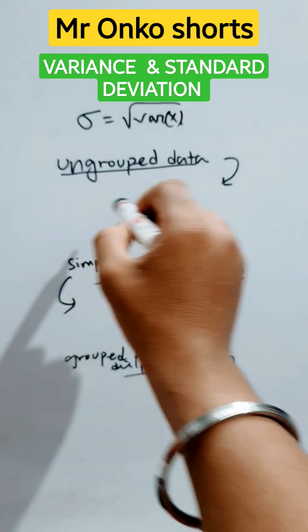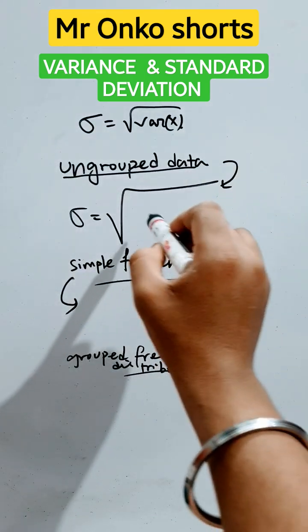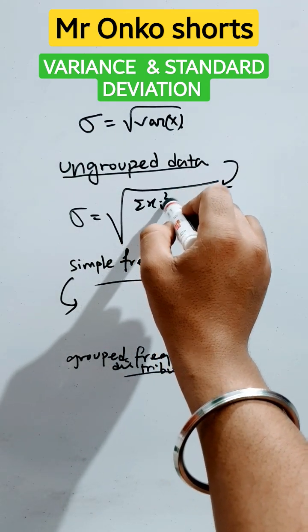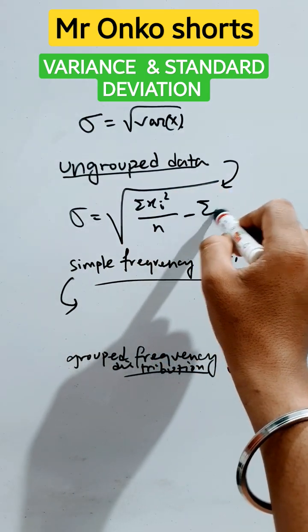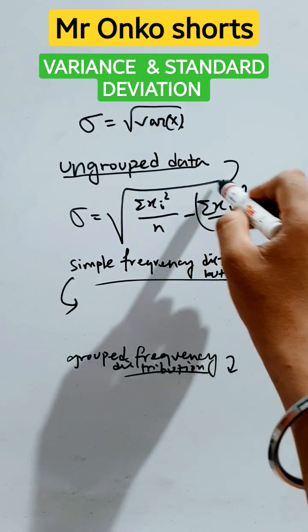For ungrouped data, the formula is the square root of summation of xi squared divided by n minus summation of xi by n whole squared.